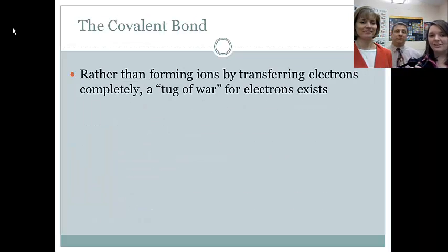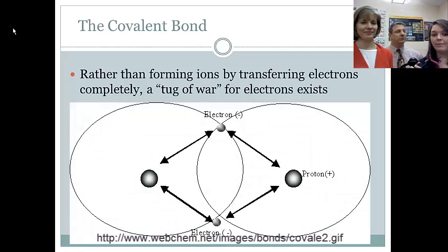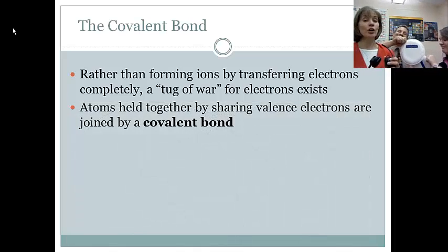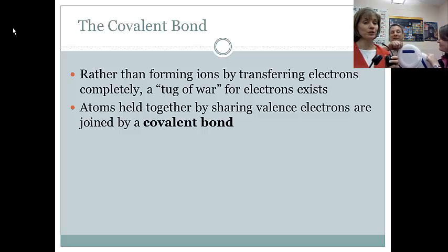So what we looked at when we looked at these compounds, scientists did, is that they're actually forming a covalent bond. So instead of forming those ions and giving up and gaining electrons, they're now instead doing a tug of war of electrons. I really wish these two would just share because that way we could have a covalent bond. We're going to share valence electrons and form that covalent bond.